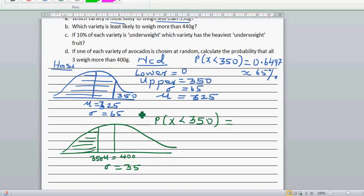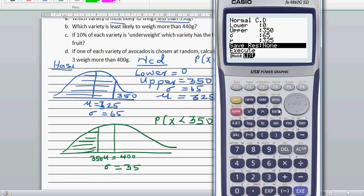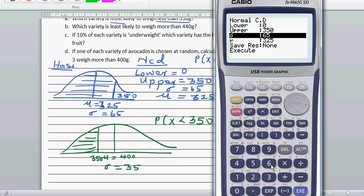Again, lower is 0, upper is 350. You have to change the mean and the standard deviation. Lower and upper is same, standard deviation is 35, and mean is 400.